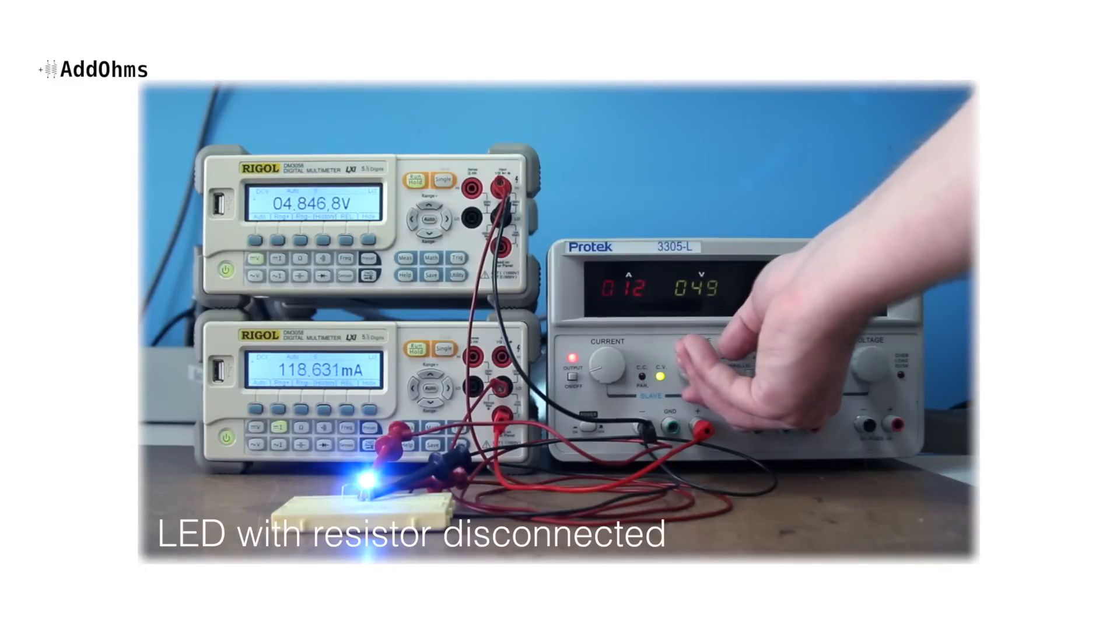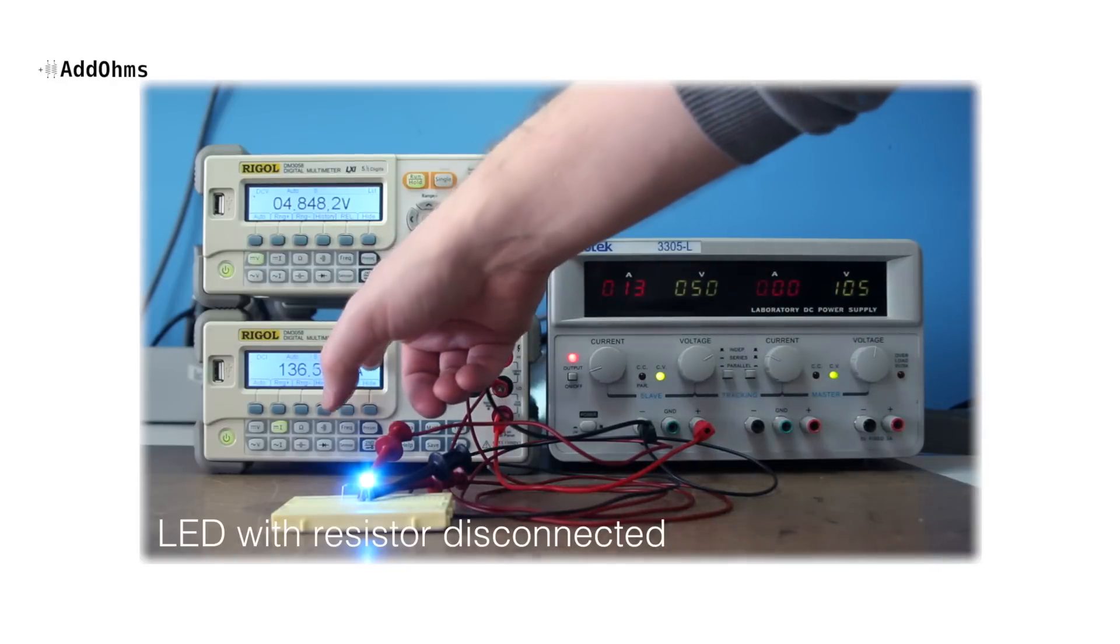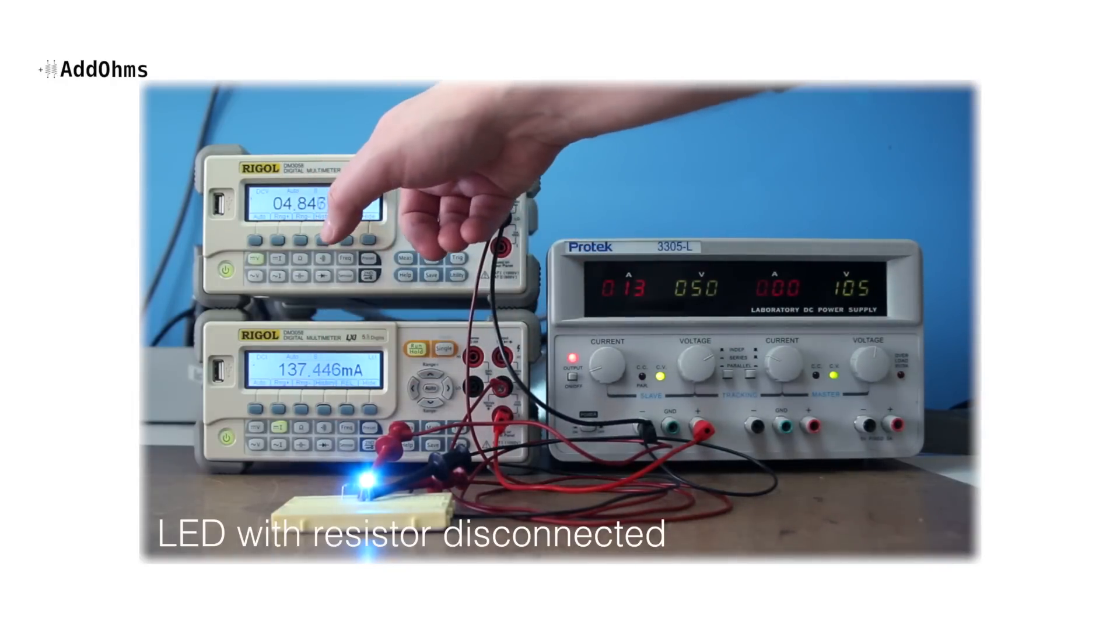Well, let's keep going to 5 volts. At this point, we see it starting to draw almost 140 milliamps. This is where we have to be careful because without a current limit, the LED is drawing lots of current.